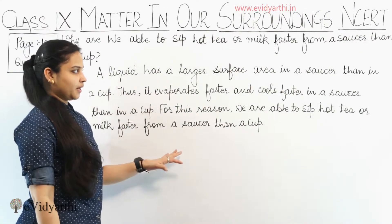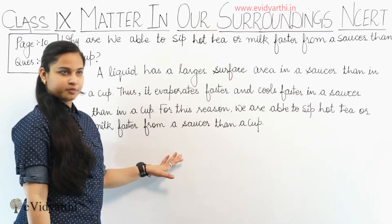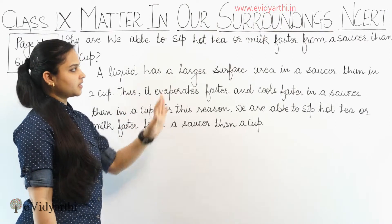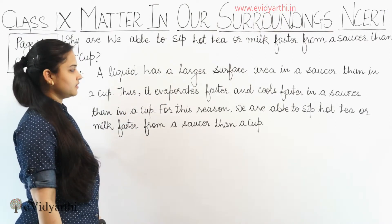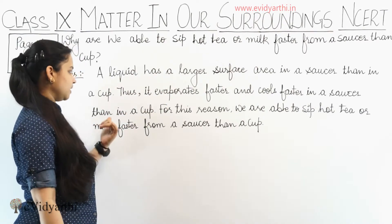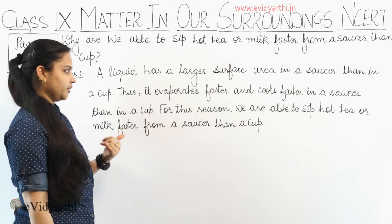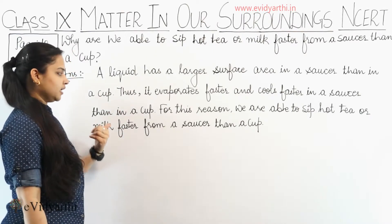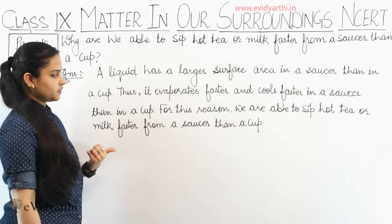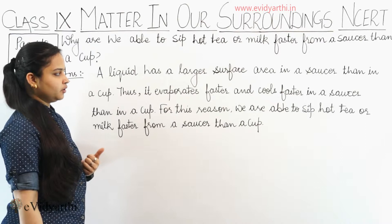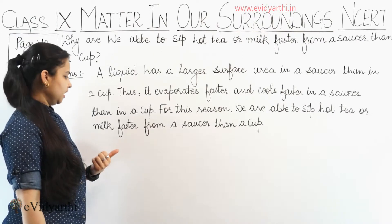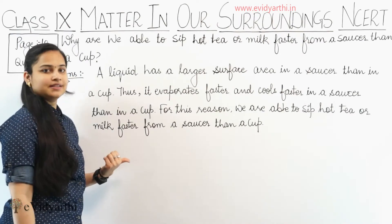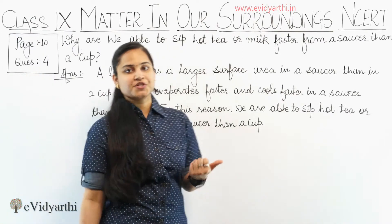So this is how you have to write it in your notebooks. A liquid has a larger surface area in a saucer than in a cup. Thus it evaporates faster and cools faster in a saucer than in a cup. For this reason, we are able to sip hot tea or milk faster from a saucer than a cup.